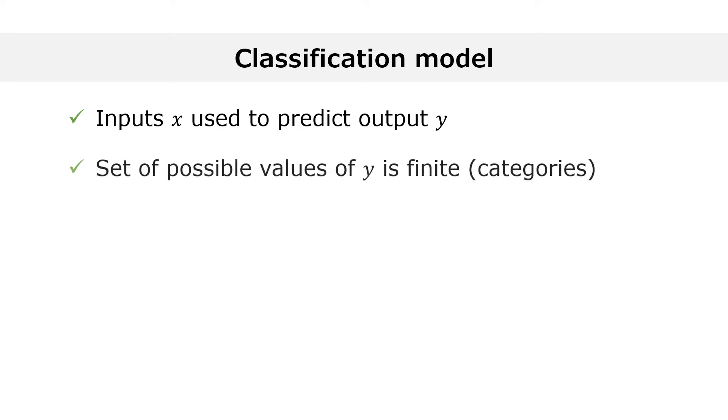As usual, we have some input variables x that we use to predict an output variable y. A classification model is used when the set of values that y can take is finite, or y can be one of a finite set of categories.